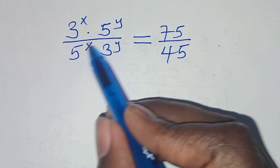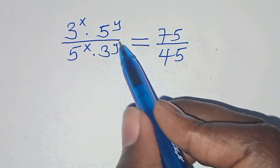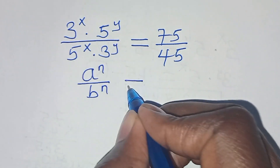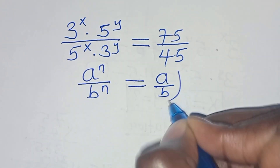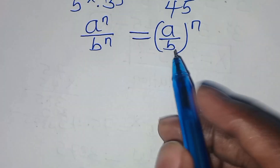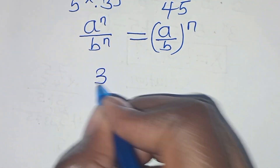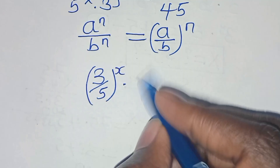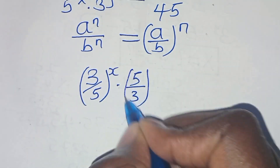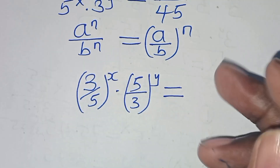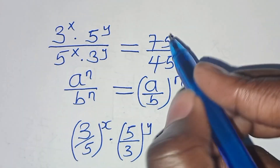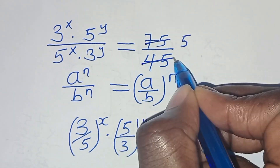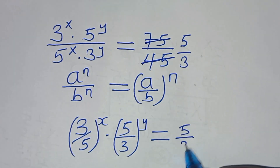Now, 3 to the power of x over 5 to the power of x, and 5 to the power of y over 3 to the power of y — this is in the form of a to the power of n over b to the power of n, which we can express as (a over b) raised by n. Applying this exponent property, we have (3 over 5) raised by x, times (5 over 3) raised by y, this is equal to 75 over 45. Simplifying: 75 divided by 15 is 5, 45 divided by 15 is 3, so here we have 5 over 3.